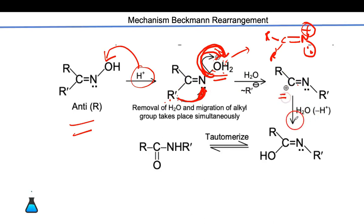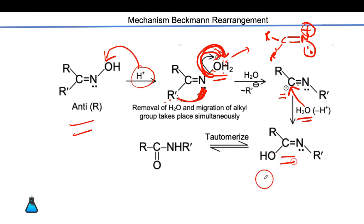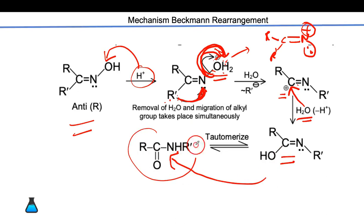Water donates OH to the carbocation, giving an enol form which tautomerizes to give the amide. So this is the basic mechanism of the Beckmann rearrangement.